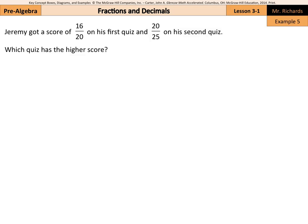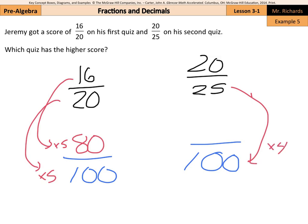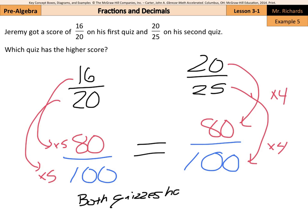Jeremy got a score of 16/20 on his first quiz and 20/25 on his second quiz. Which quiz has the higher score? Well, if we look, we could divide into decimals, or on certain questions, you may be able to recognize that if your denominator can easily get into a fraction with 100, then we can compare. And this is one such fraction. Because if I multiplied 20 by 5, I get 100. So, if I multiply 16 by 5, this total is 80. And likewise, 25 times 4 was 100. So, 20 times 4 is 80. Well, which quiz has the higher score? It's almost a trick question because they're actually equal to each other. So, both quizzes have the same score.